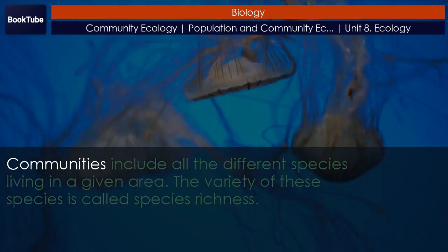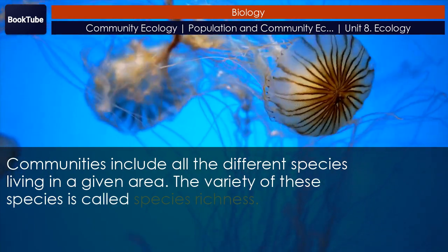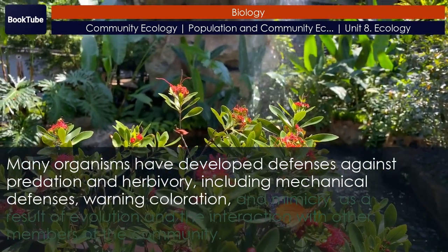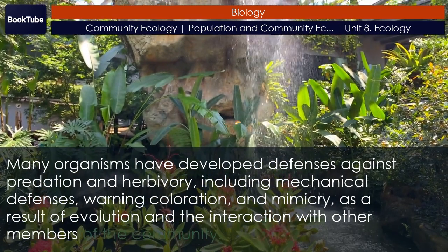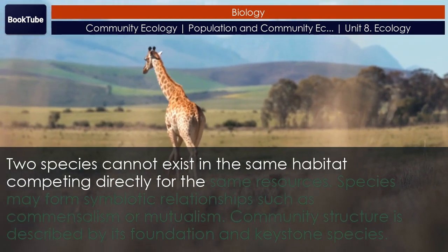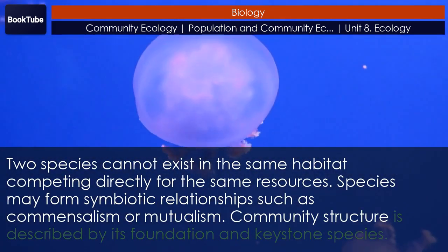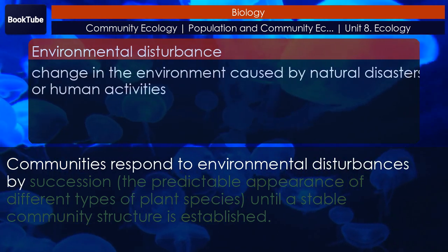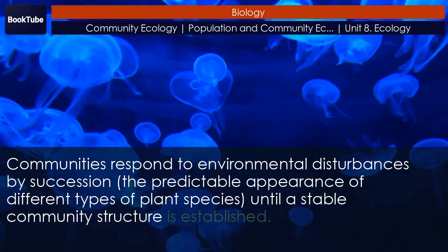Section summary. Communities include all the different species living in a given area; the variety of these species is called species richness. Many organisms have developed defenses against predation and herbivory, including mechanical defenses, warning coloration, and mimicry, as a result of evolution and interaction with other community members. Two species cannot exist in the same habitat competing directly for the same resources. Species may form symbiotic relationships such as commensalism or mutualism. Community structure is described by its foundation and keystone species. Communities respond to environmental disturbances by succession — the predictable appearance of different types of plant species until a stable community structure is established.